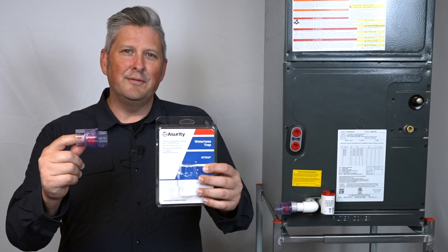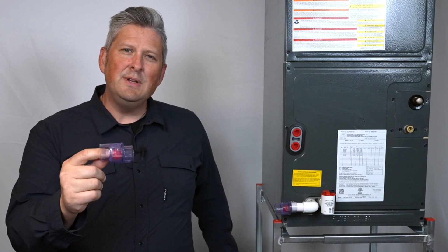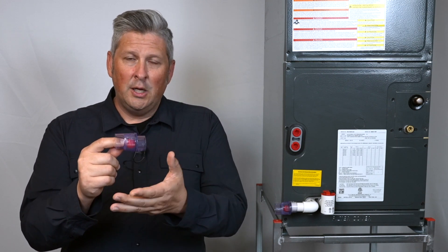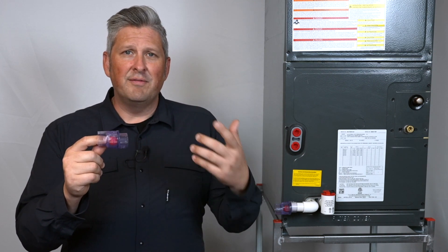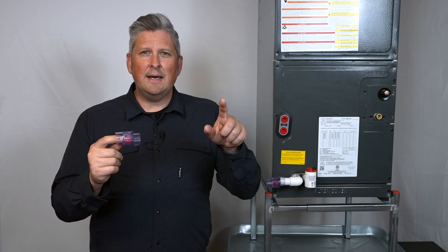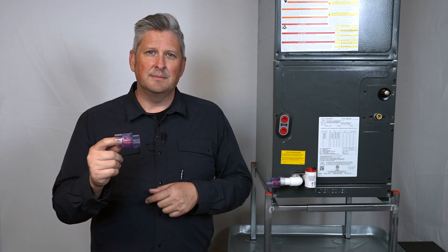The W-Trap addresses all of those issues. Because of its unique design, it reduces trap height by up to 60%. Because it doesn't hold water, there's no need to worry about it drying out. It won't freeze and break or develop odors over time. It also eliminates the geyser effect that can happen in traditional traps, where water is sucked out of the trap into the unit. Now, let's look at the W-Trap up close to see its design and how it works.